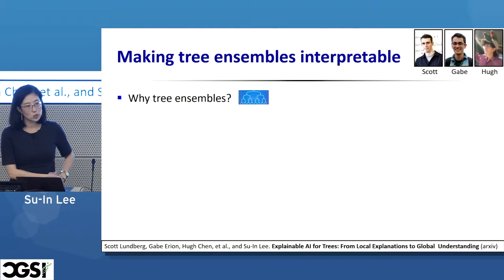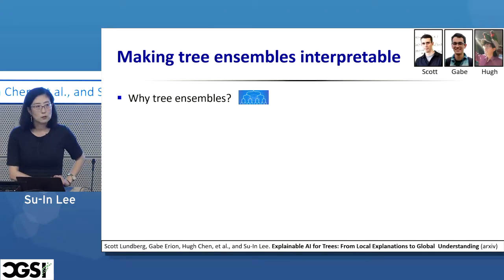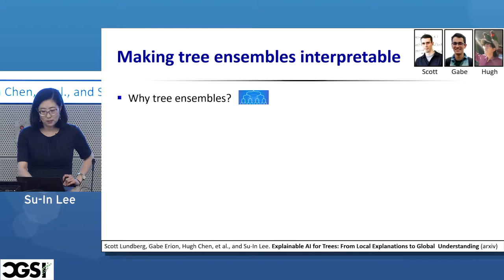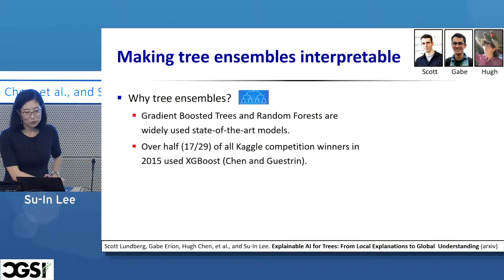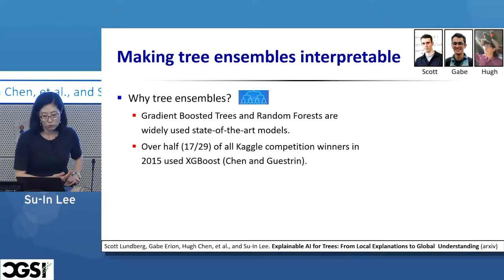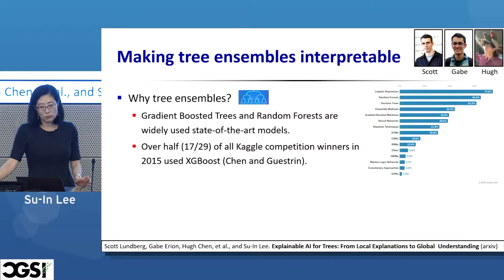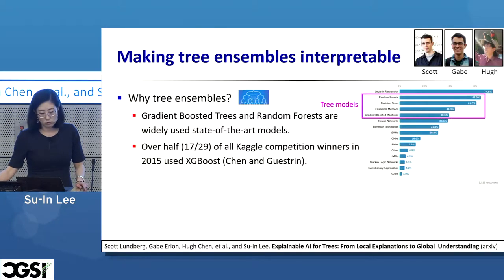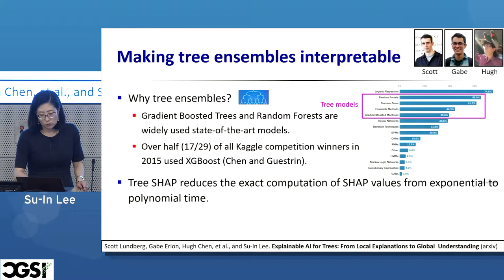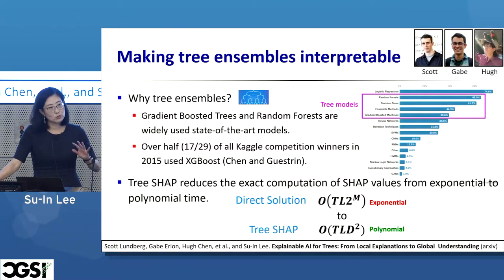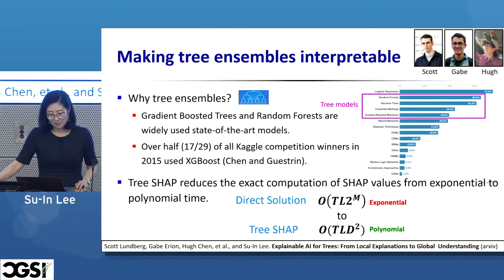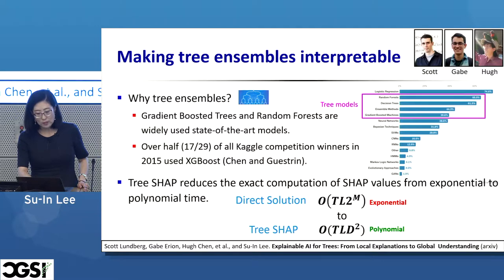Independently, we developed machine learning methods to efficiently compute SHAP values for particular model types — specifically tree ensembles. Tree models are extremely popular; many Kaggle competition winners use XGBoost, a fast implementation of gradient boosted decision trees, and tree models are the most widely used models in industry. We designed a tree algorithm that reduces the exact computation of SHAP values from exponential — n factorial orderings — to polynomial time.